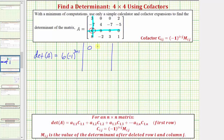And the elements will be zero, zero, two, four, negative seven, negative five, negative two, three, one. Notice how the remaining elements in row three are zero, so we could stop here, but let's show a little more work.